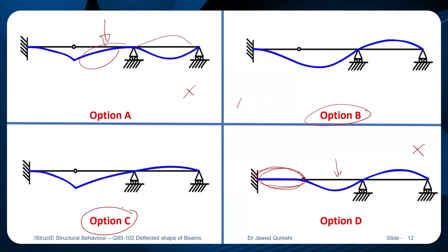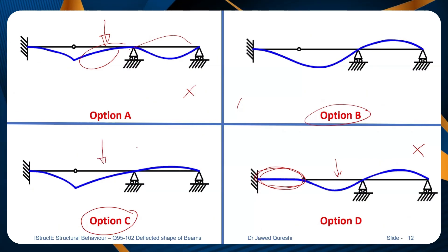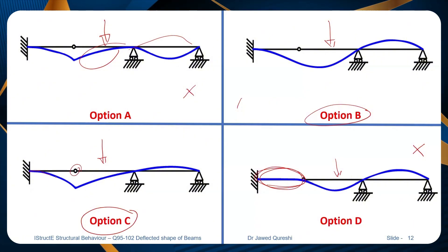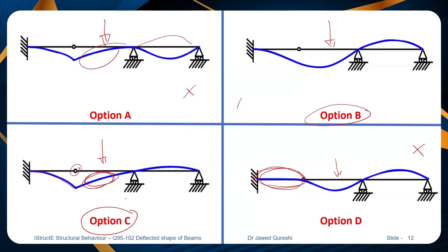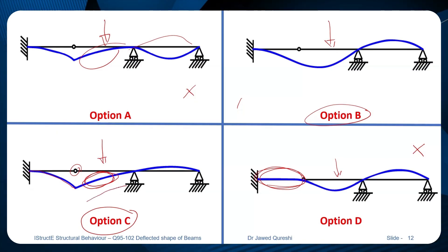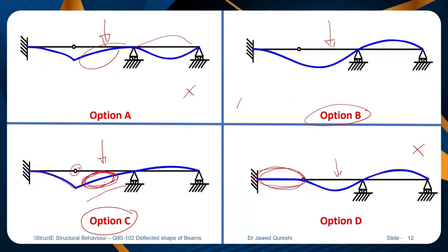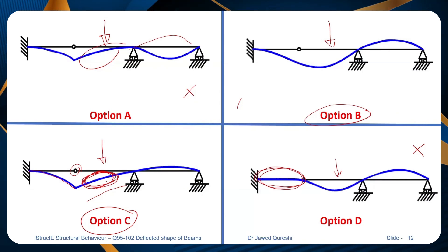I want to explore it myself to determine which option is correct, and I will use software as well to double-check if my answer is right or wrong. When we are applying loading here, certainly this should go down. But because of this internal pin, the beam is going to behave differently. I'm a little bit confused here because it does not clearly show sagging — it shows a little bit of hogging but the difference is very small. I took this example from the Institution of Structural Engineers certificate in structural behavior practice questions.